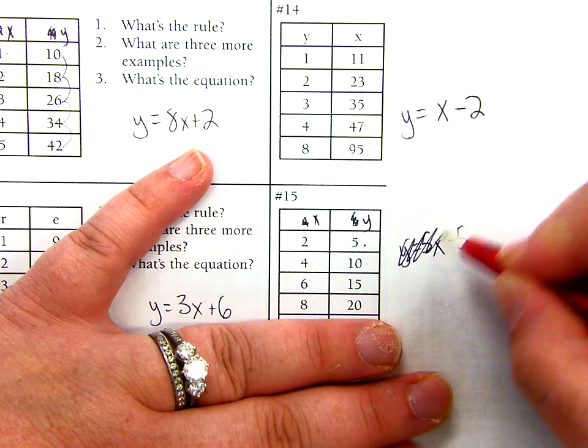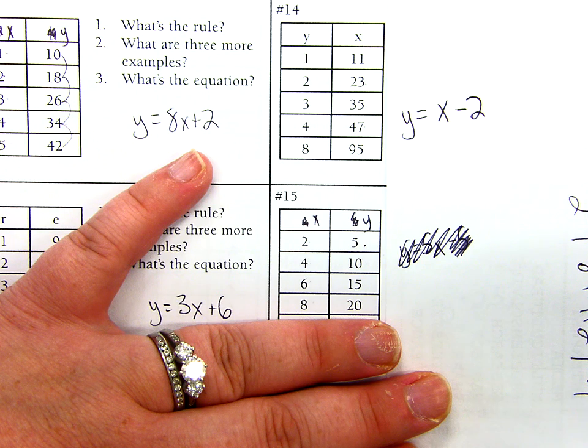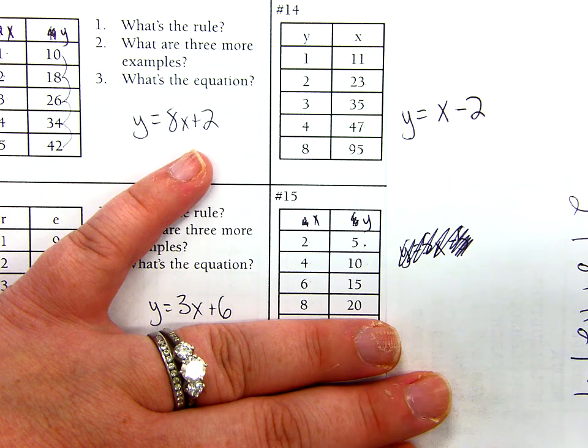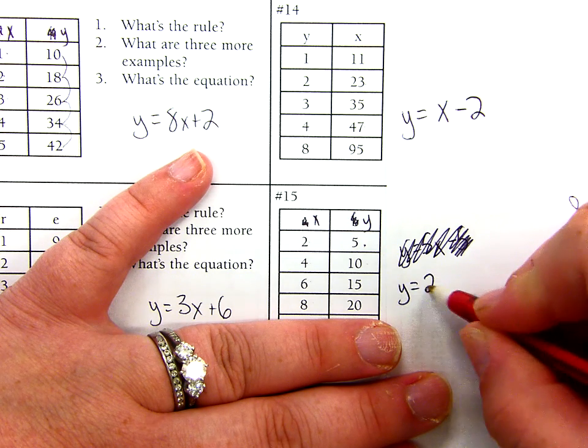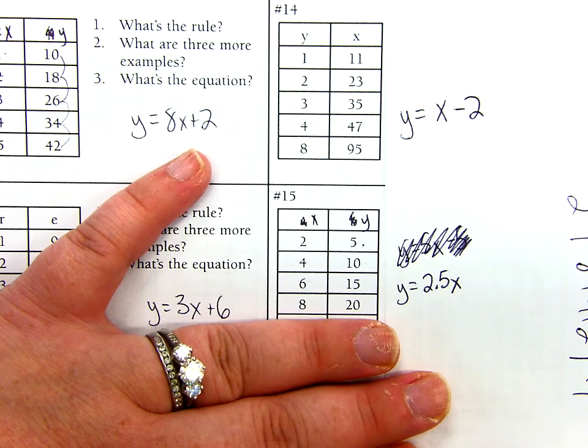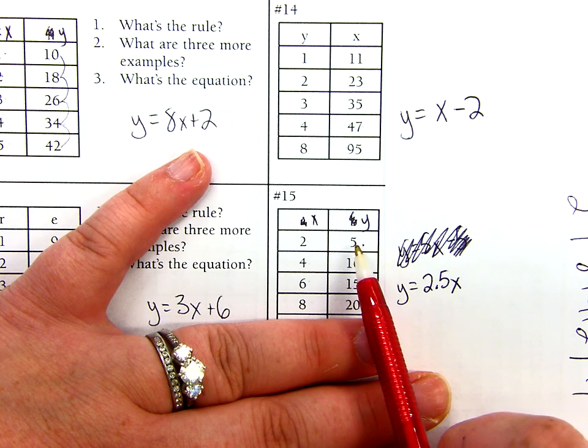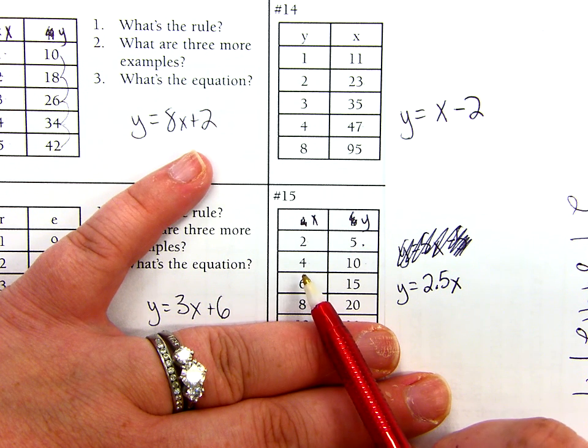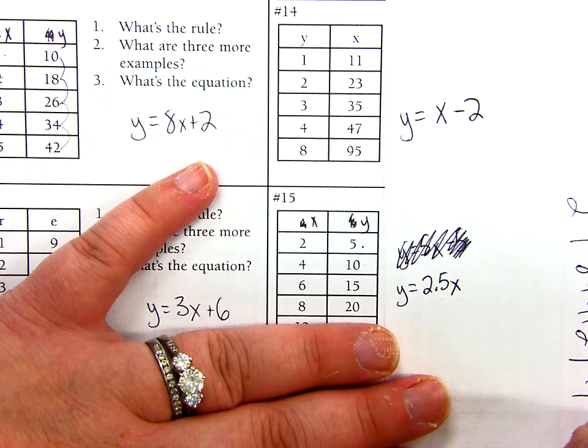So every 2, I'm going up 5, which means that every 1, I'm actually going up 2.5. So let's try that. If I start with 2.5 times X. All right, now let's try. So 2 times 2.5, oh, that is 5. I don't have to add or subtract anything, and I'm already there. 4 times 2.5, it is 10. That's my function right there.